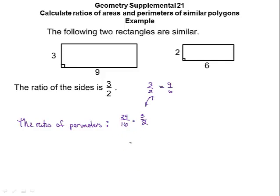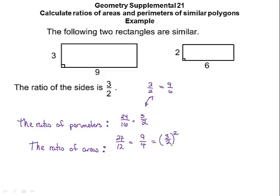If I reduce 24 over 16, I also get 3 over 2 — so they match. For the ratio of the areas: the area of the large rectangle is 27 (3 times 9), and the area of the small one is 12. Reducing 27 over 12 — both divide by 3 — gives 9 over 4. And 9 over 4 is (3/2) squared, because 3 squared is 9 and 2 squared is 4. So the ratio of the areas is the square of the ratio of the sides.